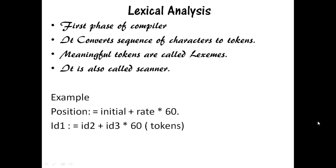Consider the example: position = initial + rate * 60. Here the characters in the assignment statement are grouped into tokens. Position is an identifier, then assignment symbol, initial is an identifier, then plus sign, rate is an identifier, multiplication sign, then the number 60. Now the statement is grouped into tokens. Blank symbols separating the characters of these tokens are normally eliminated by lexical analysis.